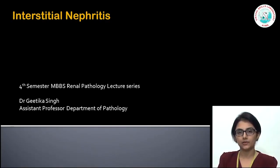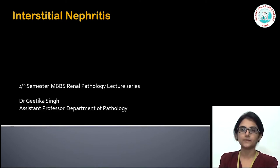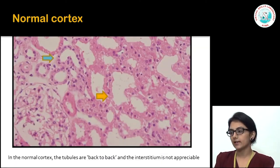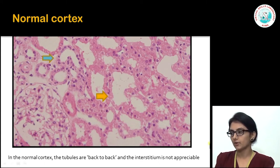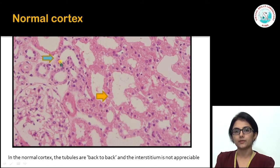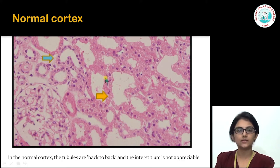Welcome to the series in renal pathology. Today we are going to be talking about interstitial nephritis. Looking at the first slide, we can see what the normal kidney looks like. The yellow arrow points to the proximal convoluted tubule with its abundant eosinophilic cytoplasm, the distal convoluted tubule with more cuboidal lining cells, more packed nuclei and less cytoplasm. The interstitium is really just a potential space between these tubules.